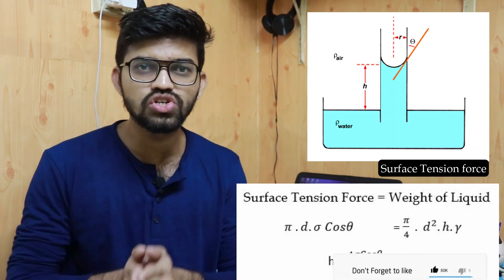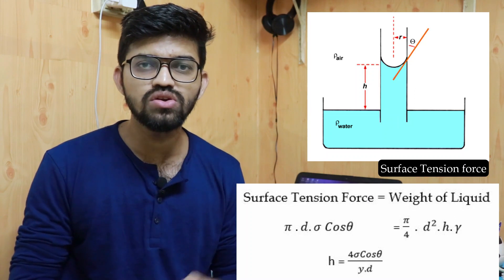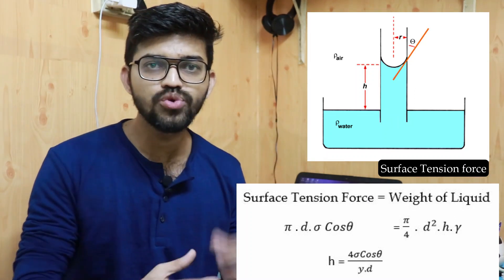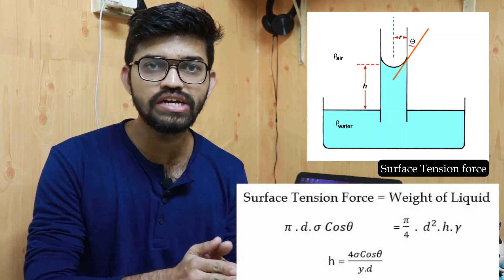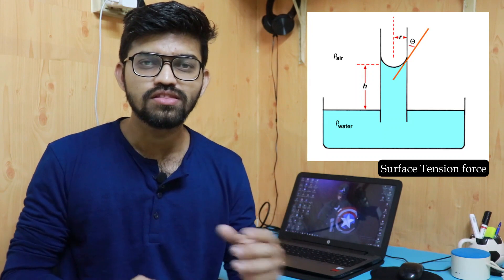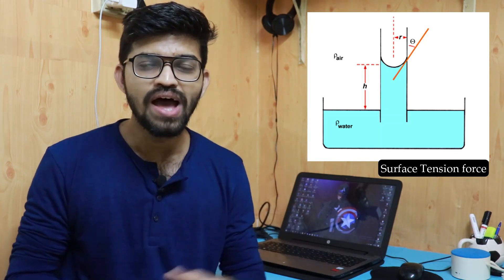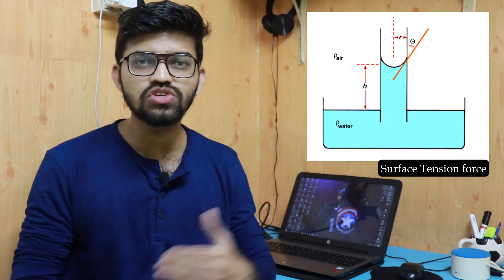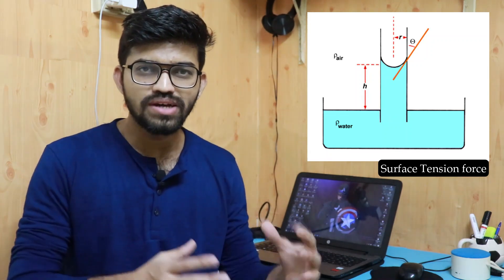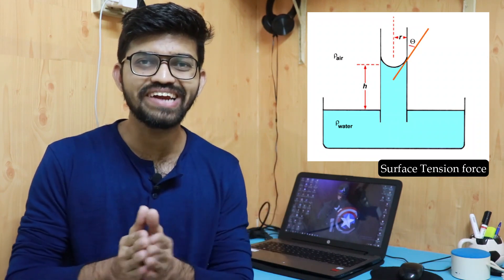This equation applies for both capillary rise and capillary fall. Note that for pure water in a clean glass tube under atmospheric conditions, the contact angle theta equals zero degrees. For mercury, theta equals 140 degrees. These are the standard values used when applying the capillary equation.